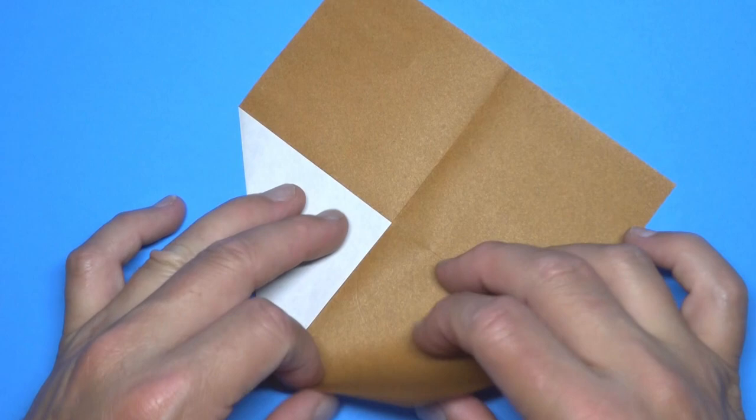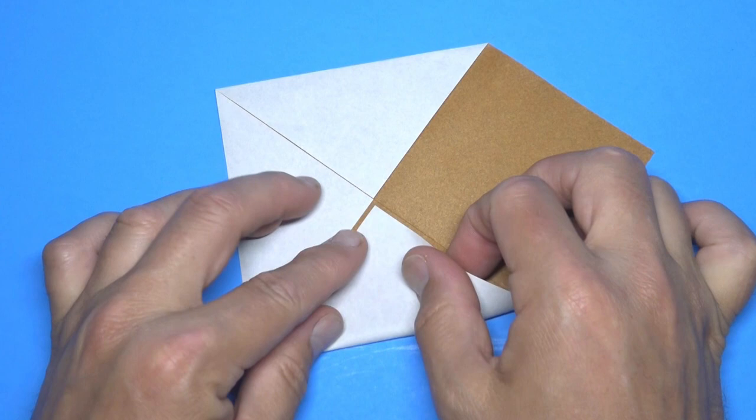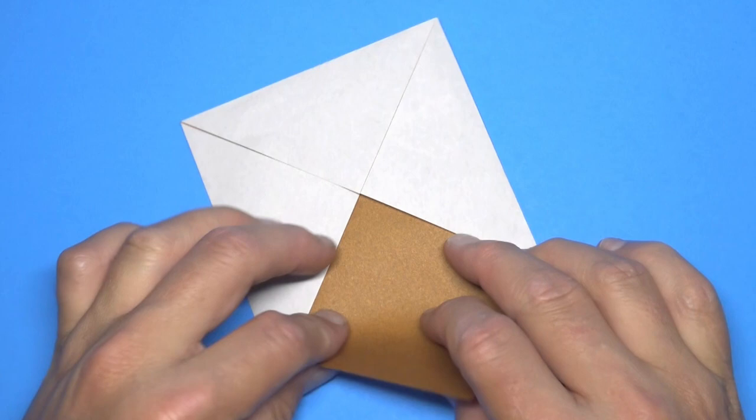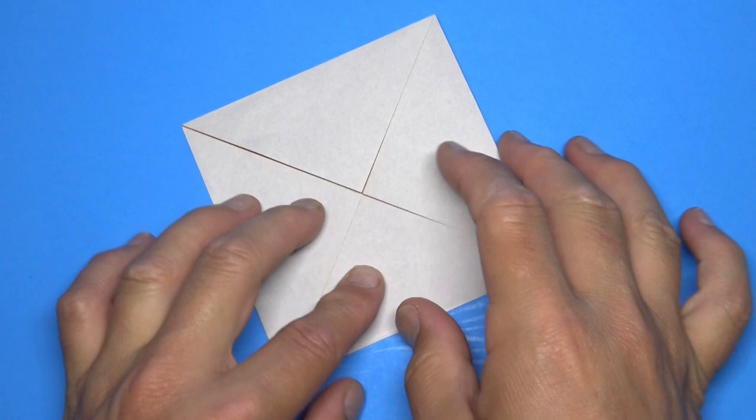Fold all the corners to the center. If I'm going too fast, you can always pause the video or put it in slow-mo mode. And then again.